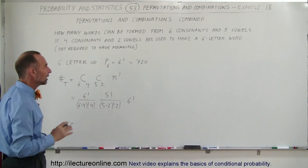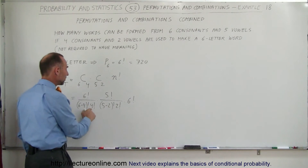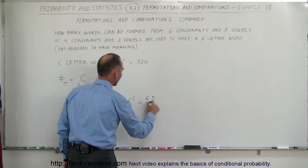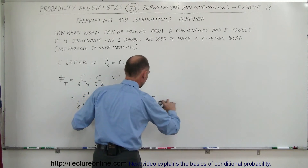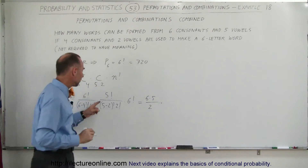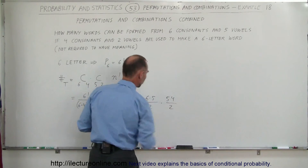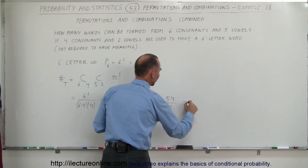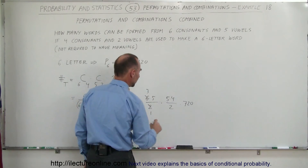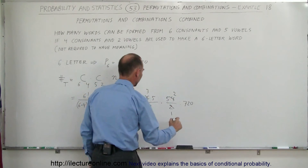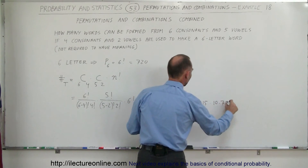That will be the total number of permutations we can have under these circumstances. Let's simplify that. We have six factorial divided by four factorial, equal to six times five divided by two factorial, which is simply two. Then five factorial divided by three factorial equals five times four divided by two factorial, which is simply two. Then we multiply times six factorial which is 720. Simplifying further: the six and the two reduce to three and one, the four and the two reduce to two and one. So this would be equal to 15 times 10 times 720.